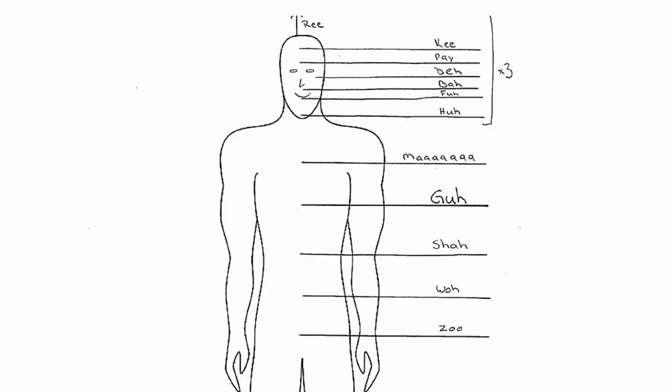So because speech isn't just about phonetics, what we're going to cover today is what's known as the Linklater ladder. The ladder in question starts at the base of the pelvis and climbs all the way through the top of the head. As you go up through the different chambers, different vowel sounds resonate more effectively in each area. So let's start at the bottom and work our way up.